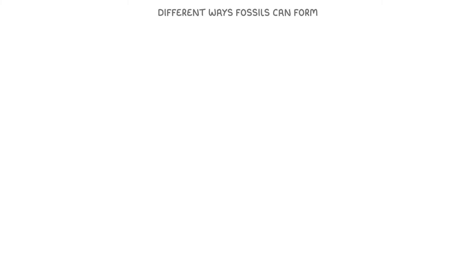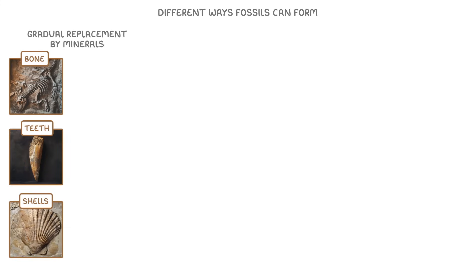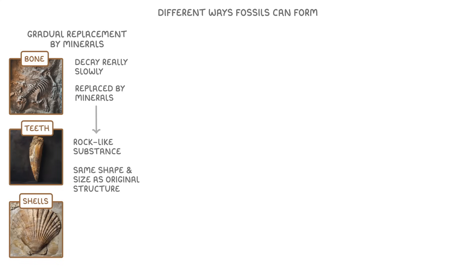There are loads of different types of fossils because there are loads of different ways in which fossils can form, but there are three main ways you need to know about. The most common way that fossils form is by gradual replacement by minerals. Because body parts like bones, teeth, and shells all decay really slowly, they can be gradually replaced by minerals, slowly forming rock-like substances that are in the exact same shape and size as the original structures. So when we dig them up and separate them from the surrounding rock, what we're left with is a perfect model of the bone or tooth.